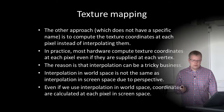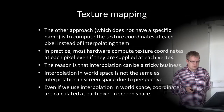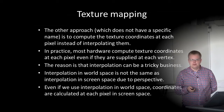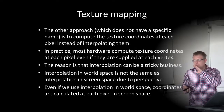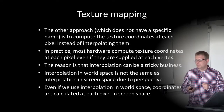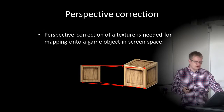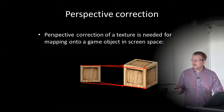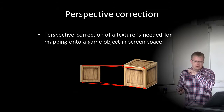The other approach is to compute the texture coordinates at each pixel instead of interpolating them. In practice, most hardware computes texture coordinates at each pixel even if they are supplied at each vertex, because interpolation in world space is not the same as interpolation in screen space due to perspective. So perspective correction of a texture is needed for mapping onto a game object in screen space.